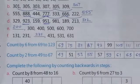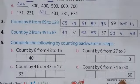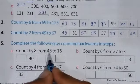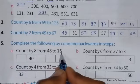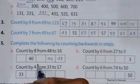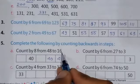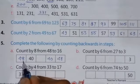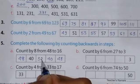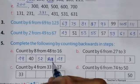The next question is question 5: complete the following by counting backwards in steps, so backward in steps. Count by 8 from 48 to 16. It means here is 48, now subtract 8 you will get 40. Then subtract 8 you will get 32, again subtract 8 you will get 24, again subtract 8 you will get 16.